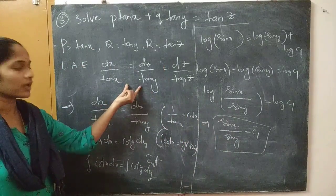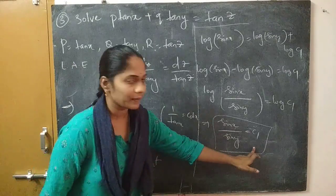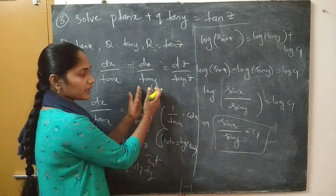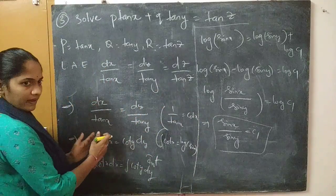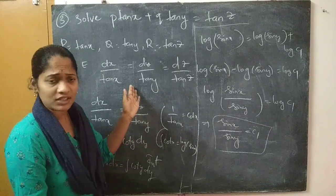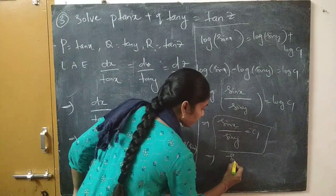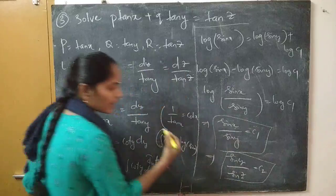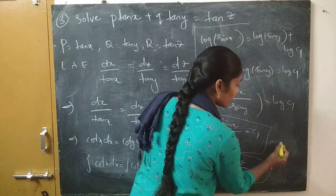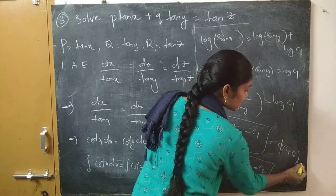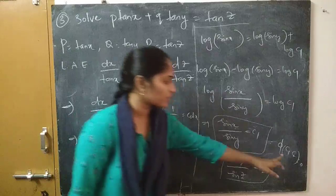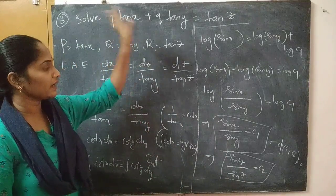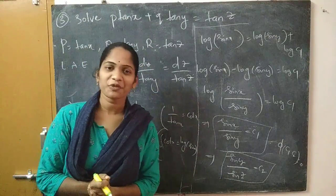Now taking the second and third fractions, dy by tan(y) equals dz by tan(z), and following the same procedure with y and z in place, we get sin(y) by sin(z) equals c2. This is another independent solution. The general solution is phi(c1, c2) equals 0, where c1 equals sin(x)/sin(y) and c2 equals sin(y)/sin(z). These are the three problems on Lagrange's method Type 1. Thank you for watching.